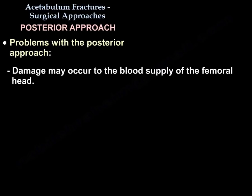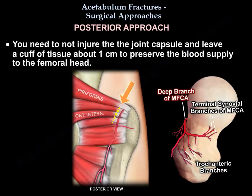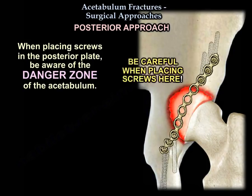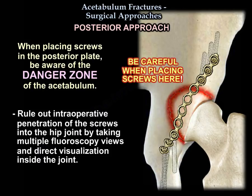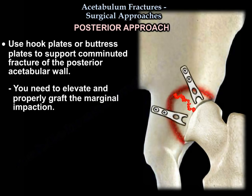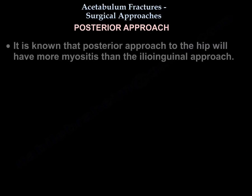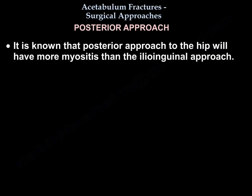Another risk of the posterior approach is damage to the blood supply of the femoral head. You must not injure the capsule; leave a cuff of tissue about a centimeter to preserve the blood supply to the femoral head. When you put the screws, be aware of the danger zone of the acetabulum. Rule out intraoperative penetration of the screws into the hip joint by taking multiple fluoroscopy views and direct visualization inside the joint. Use hook plates or buttress plates to support comminuted fracture of the posterior wall. You need to elevate and probably graft the marginal impaction. It is known that the posterior approach will have more myositis than the ilioinguinal approach.